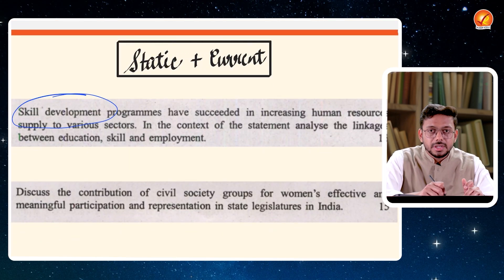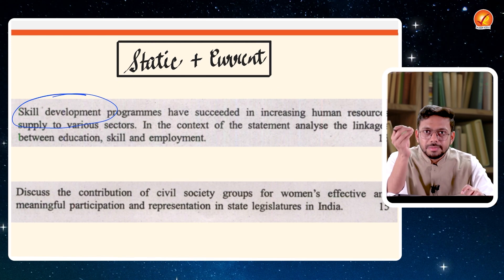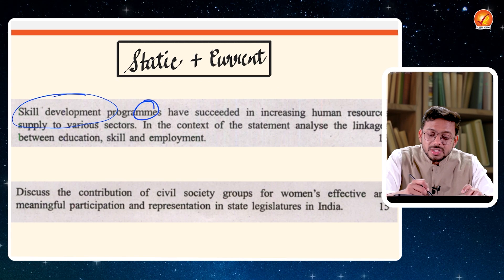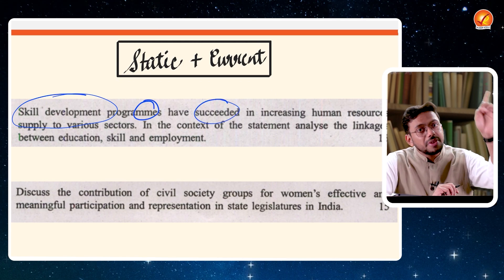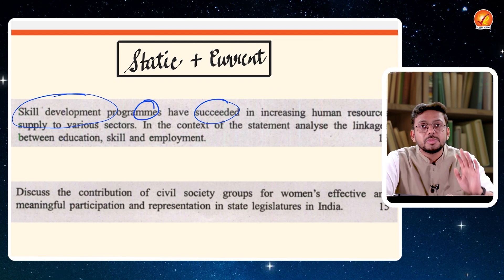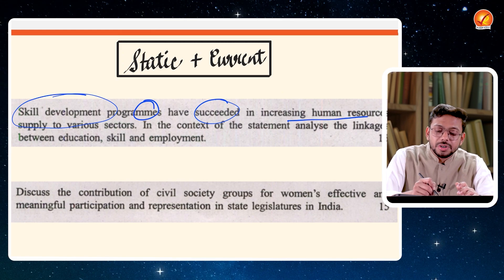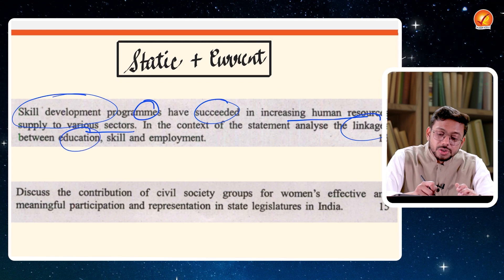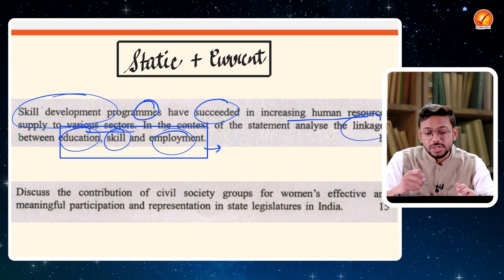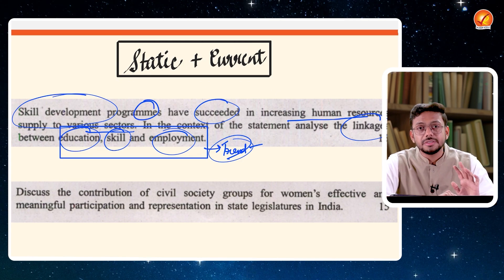Another example: skill development. A static question — skill development is covered in foundation classes, books, NCERTs everywhere. But the question is about the success of skill development programs — not factual but analytical. Because skill development is now an old issue, it is more about analyzing it now: whether programs are succeeding, the impact on increasing human resources to various sectors, and what is the linkage between education, skill development, and employment. You need the current trend and analysis — that is where current affairs is used.